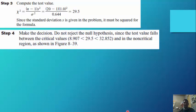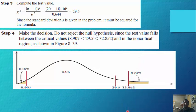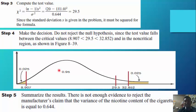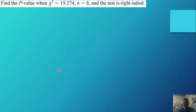Step 3: Compute the test value. Through substitution and computation, we arrive at 29.5. Since s is given as a standard deviation, it must be squared to get the variance. Step 4: Do not reject the null hypothesis since the test value 29.5 falls between the critical values and in the non-critical region. Summary: there is not enough evidence to reject the manufacturer's claim that the variance of nicotine content equals 0.644.